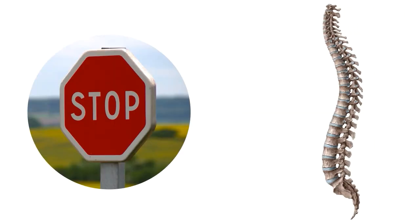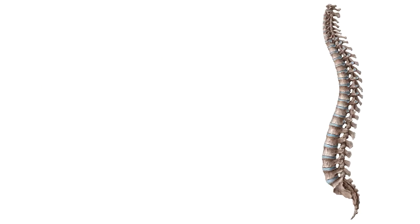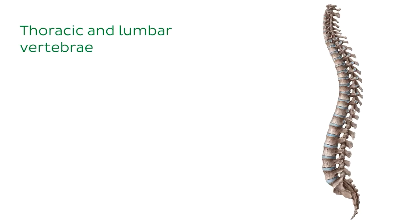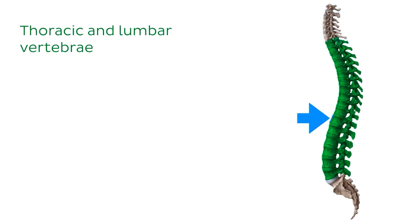Before we start with our first bony landmark, I want to mention that when I describe these vertebrae, I'm focusing specifically on their typical structure. However, when there is a transition between regions of the spine, this is reflected in the morphology of the vertebrae. For example, T1 has some features similar to those seen in the cervical spine, as well as the lower thoracic vertebrae, and the lower thoracic vertebrae start to adopt features found in the lumbar spine.